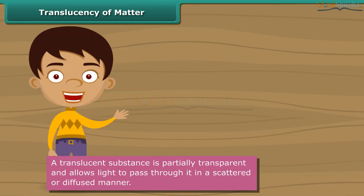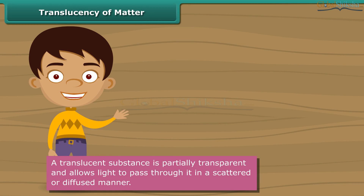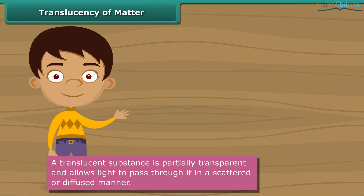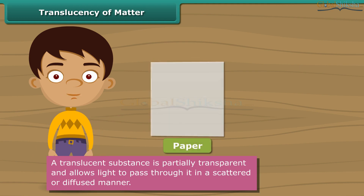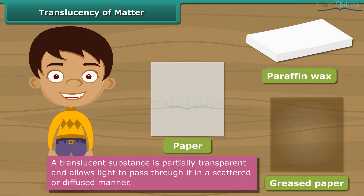A translucent substance has the characteristics of both transparent and opaque substances. While it absorbs some light, it reflects back the rest. The absorbed light is transmitted in a scattered or diffused manner. Other examples of translucent substances are paper, paraffin wax, and greased paper.